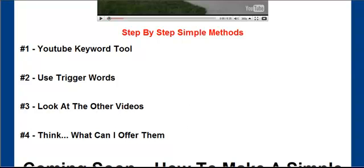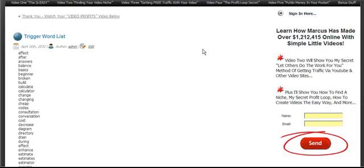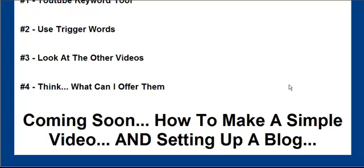For right now, we're going to wrap up this video. I want you to go out and try these methods — use the keyword Trigger Words list on your Simple Videos Big Profits site. Just put your name and email to get those and you'll get them instantly. Then come back, because very shortly I'm going to make videos about how to make a simple video the easy way — you don't even have to be in front of a camera or use your voice. I'm going to show you how people have made a lot of money with videos that are basically glorified slideshows, and how to set up a blog with AdSense, affiliate offers, and your own products — all in about five minutes. So go out and find some niches and I'll see you in the next video.